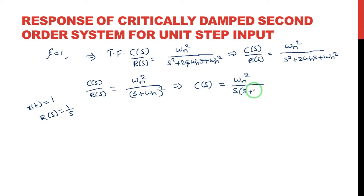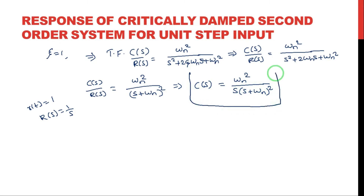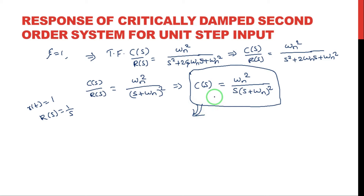The output response in the s-domain is C(s) equal to omega_n squared divided by s into (s + omega_n) squared. This is the output response in the s-domain, but we need the output response in the time domain, so we apply inverse Laplace transformation. To do that, we first apply partial fractions to C(s).